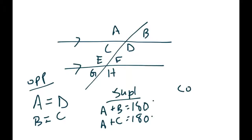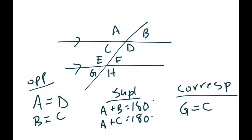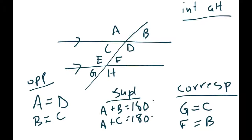For corresponding angles — any angle in the same position at the other intersection — corresponding to G is angle C, and those are equal. Corresponding to F would be angle B, and those are equal too. Corresponding angles are always equal. For interior alternate angles: the alternate interior of E is D, and those are the same. Another pair would be C and F — those are also equal.